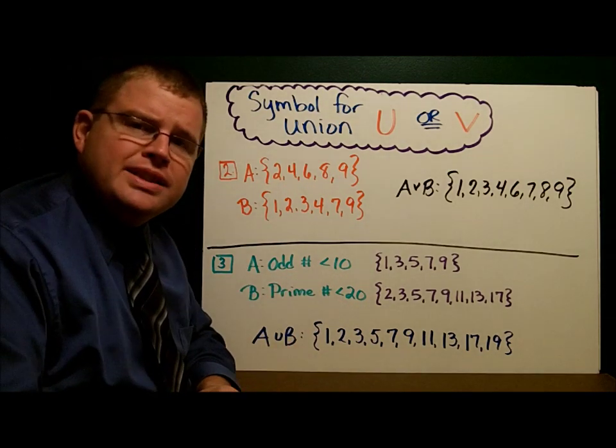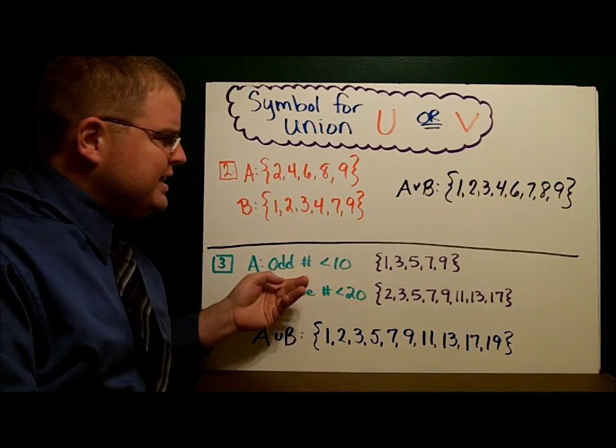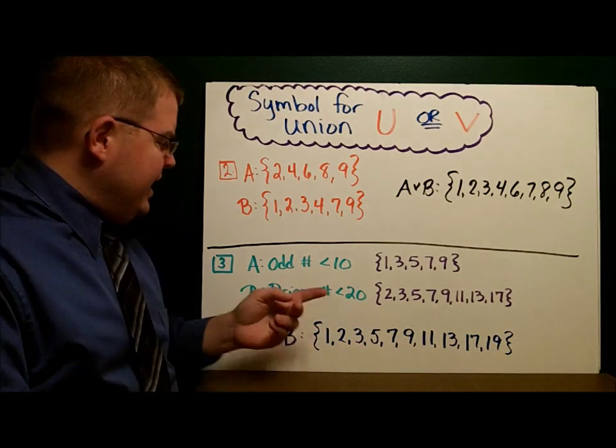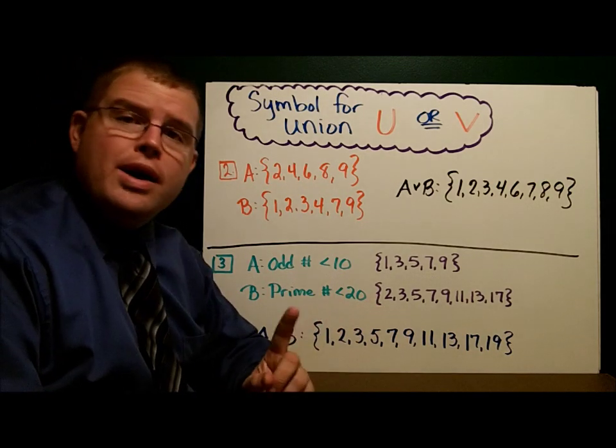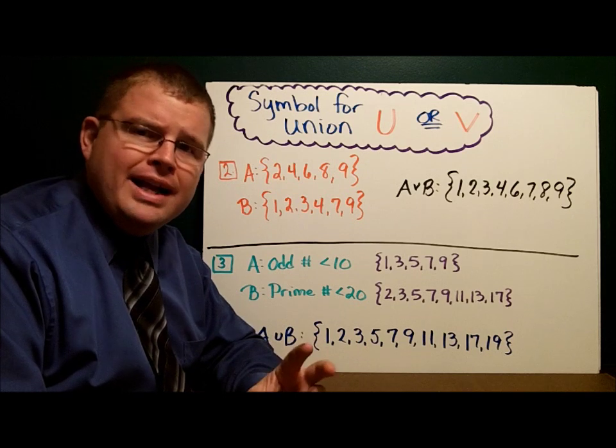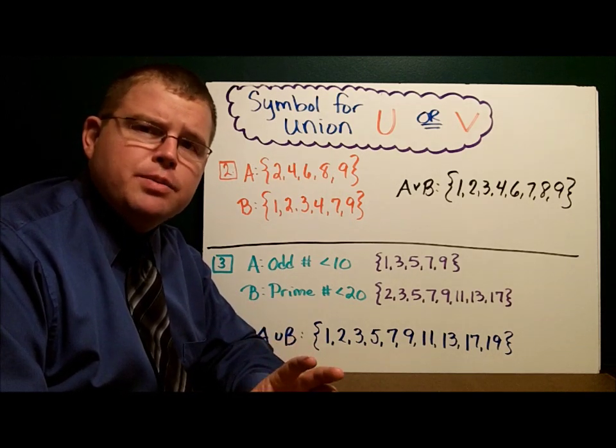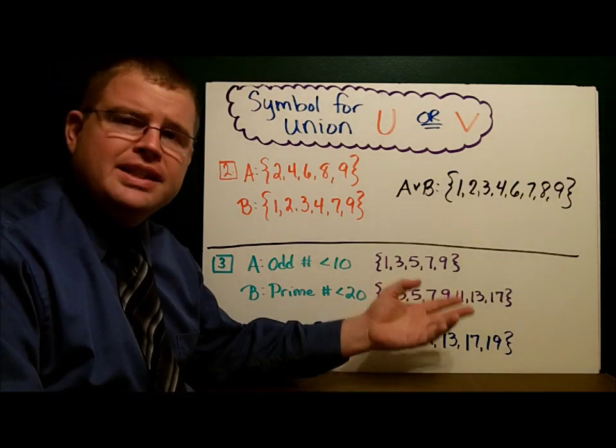Example 3 gives us two sets. The first one is the odd numbers less than 10. And the prime numbers less than 20. And remember, 1 is not a prime number because a prime number has to have two factors, the number 1 and itself. The smallest prime number is 2, 3, 5, 7, 9, 11, 13, 17.